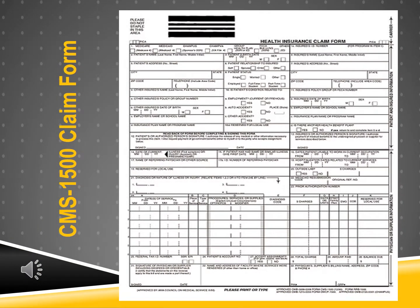Before it became the norm to submit claims electronically, a paper claim form called the CMS-1500 was used for many years. The CMS-1500 was the universal health claim form. Sometimes a paper claim form still needs to be created and sent, typically due to a previously denied claim or a claim that requires more information or an addendum. Medical billers abstract the information from the medical record to fill out a CMS-1500 claim form. Note that not every box is filled out — it's kind of like filling out your taxes.